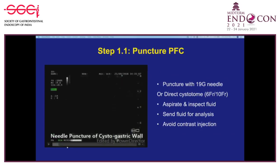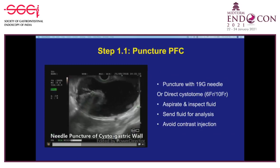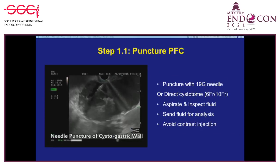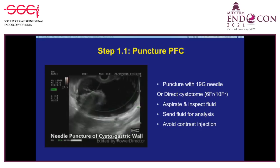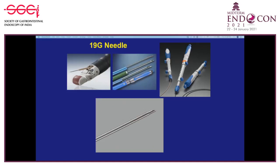For puncture, the standard approach uses a 19-gauge FNA needle. Alternatively, a cystotome—a 10 French and 6 French combination—can be used, as Europeans generally prefer. After puncture, fluid is taken for analysis; you can inspect whether it is pus, pure fluid, or turbid. The fluid is sent for analysis. Some inject contrast, but this can add infection risk without extra advantage.